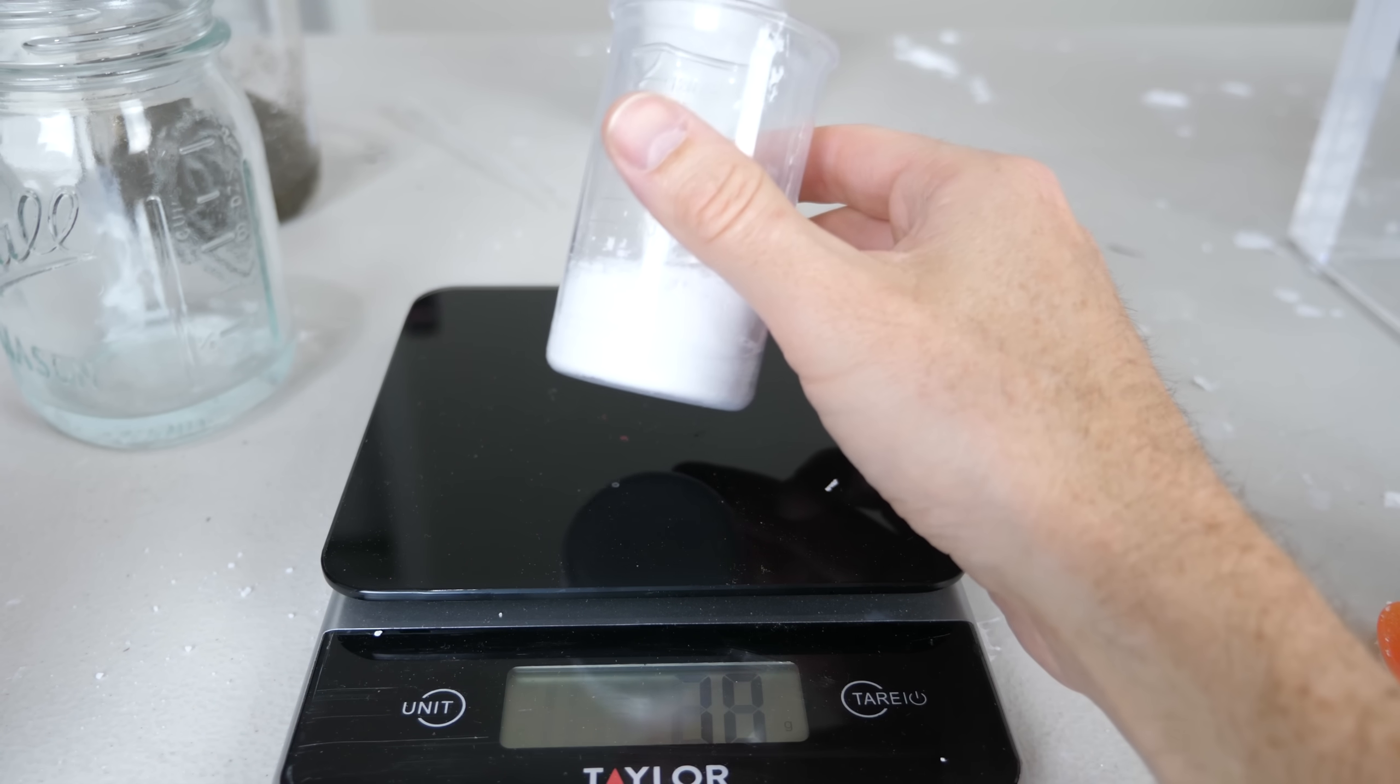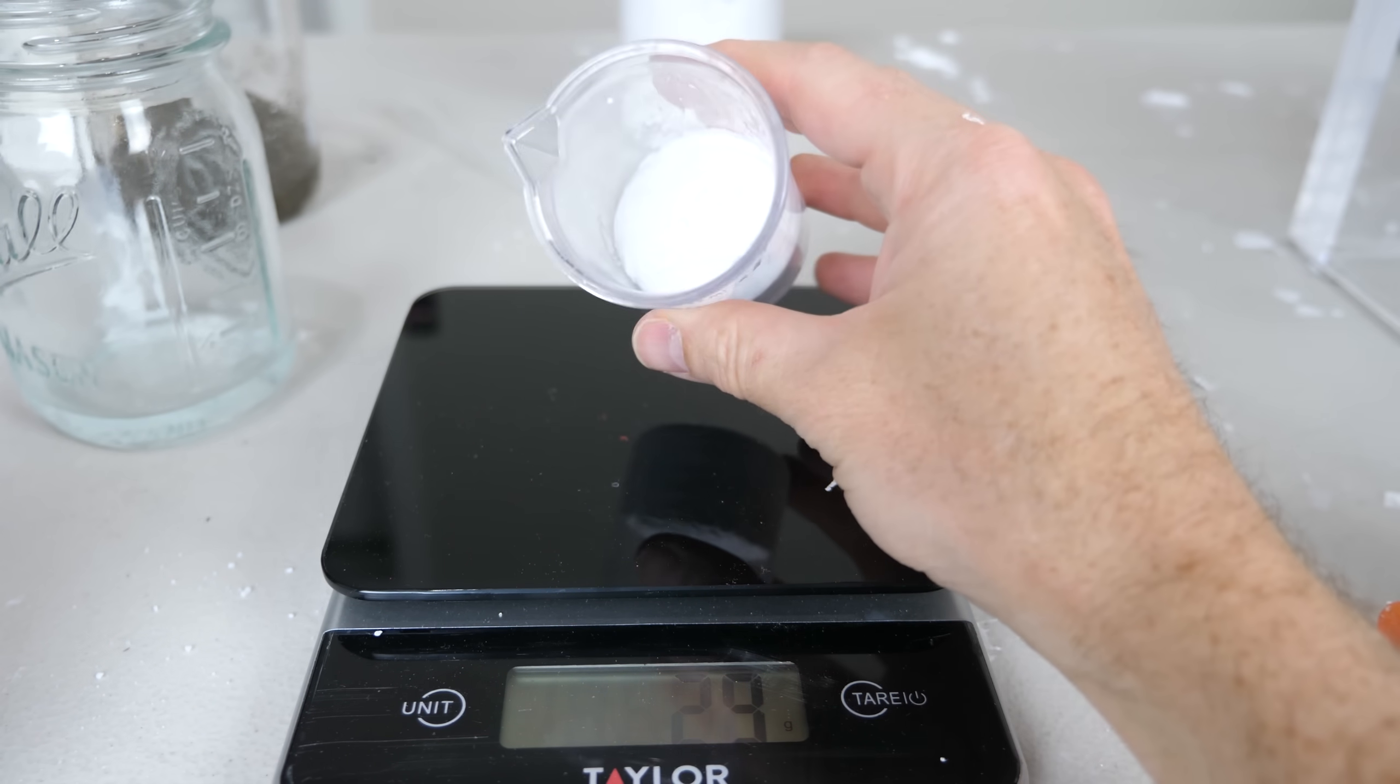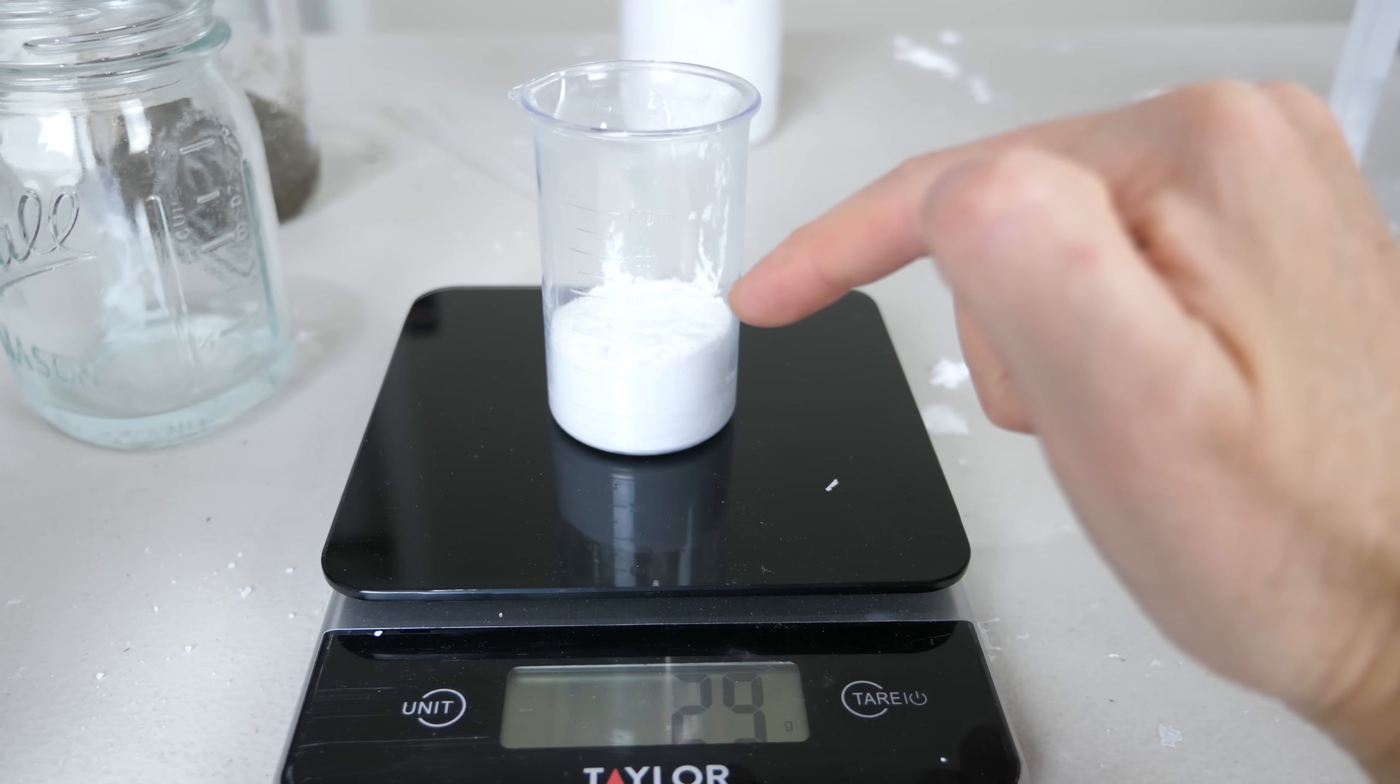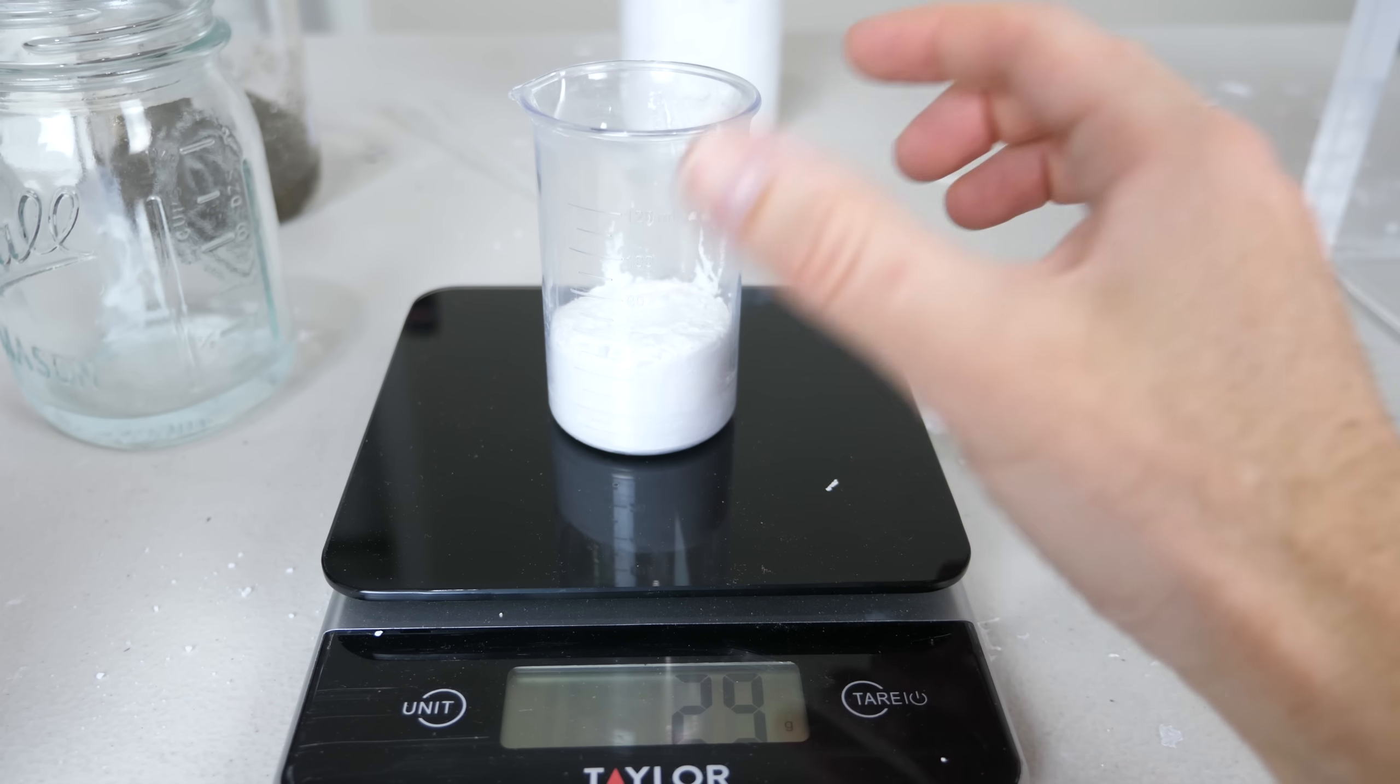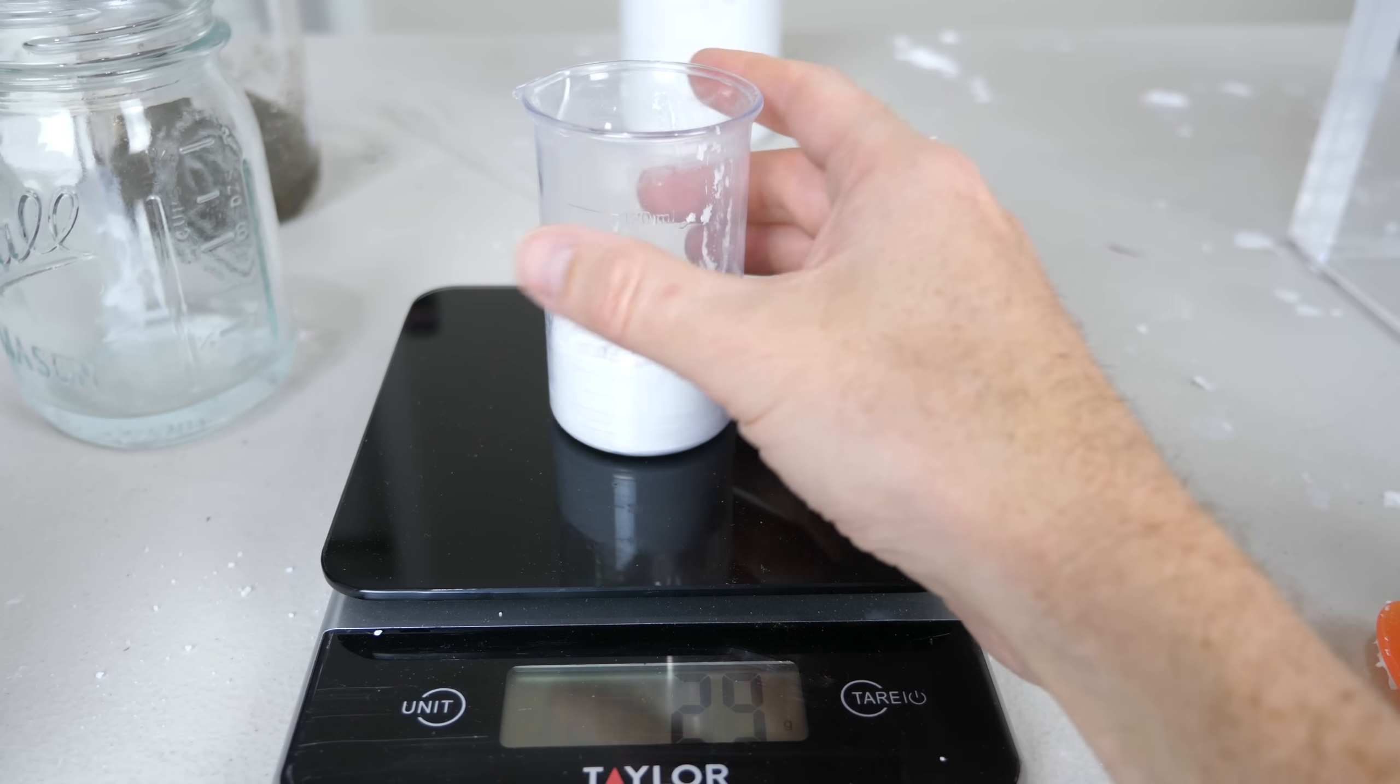Now if this were 100% water, it should weigh around 50 grams. So that means it's about half as dense as water right now. That's because the tiny little droplets of water are surrounded by this hydrophobic fumed silica, and so it makes it so that there's air in between. So there's a lot of trapped air in between here that makes it a lot less dense.